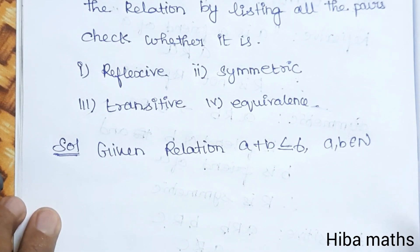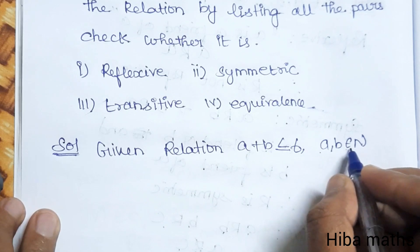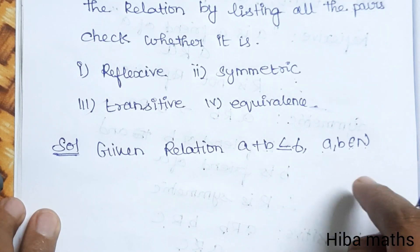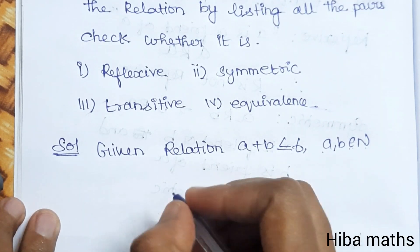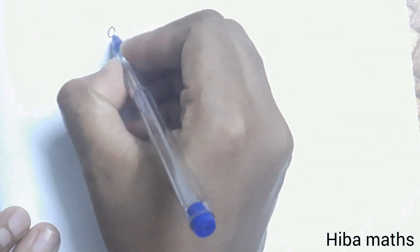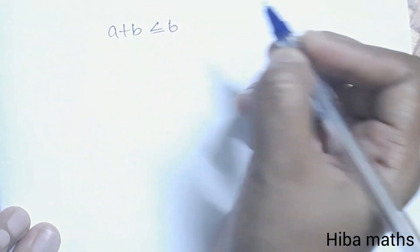First, the given relation is A plus B is less than or equal to 6, where A and B are natural numbers. So we start from 1. We will check which ordered pairs satisfy A plus B ≤ 6.